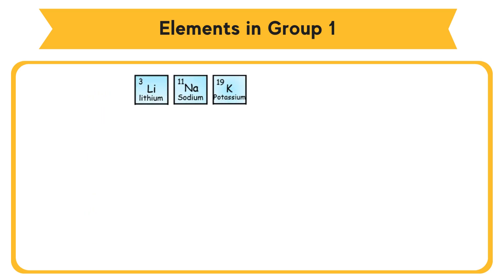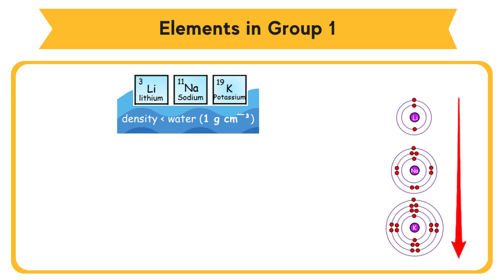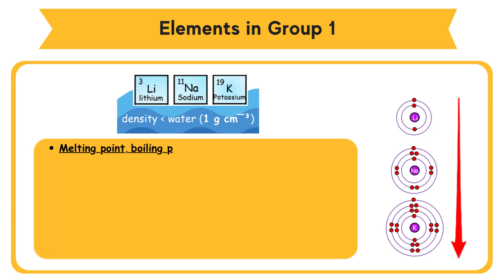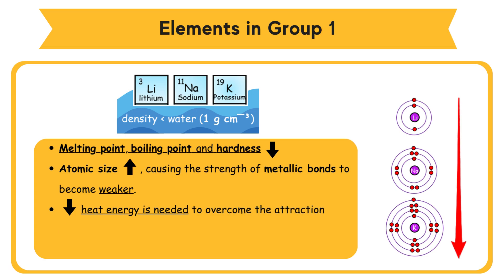Lithium, sodium, and potassium float on the surface of water because their density is smaller than water, which is 1 gram per cubic centimeter. When moving down Group 1, melting point, boiling point, and hardness decrease. The atomic size of alkali metal atoms increases, causing the strength of metallic bonds to become weaker. Less heat energy is needed to overcome the attraction force between delocalized electrons and metal cations. Density increases down the group.